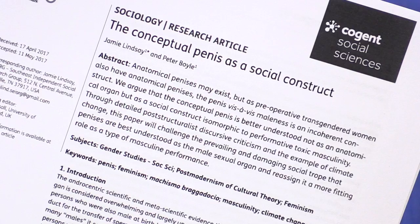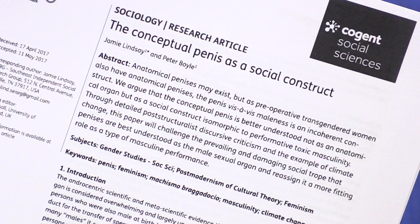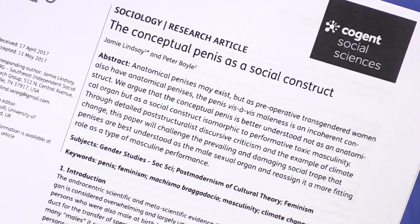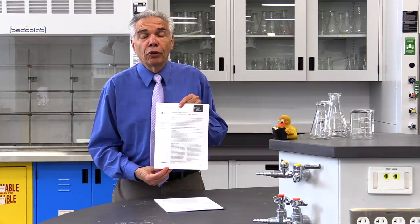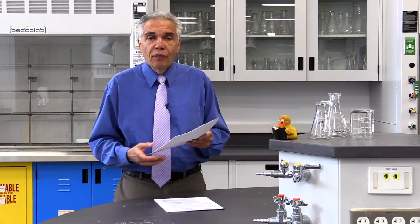On the other hand, when you get a paper like this, the conceptual penis as a social construct, well immediately your eyebrows go up. And believe it or not, that paper is really a hoax paper that two researchers submitted to a journal just to see whether or not it could be published. It is total nonsense. The sentences make no sense. They use nonsensical terms, but nevertheless it got into print because somehow it skipped by the peer review process in one of these predatory journals.